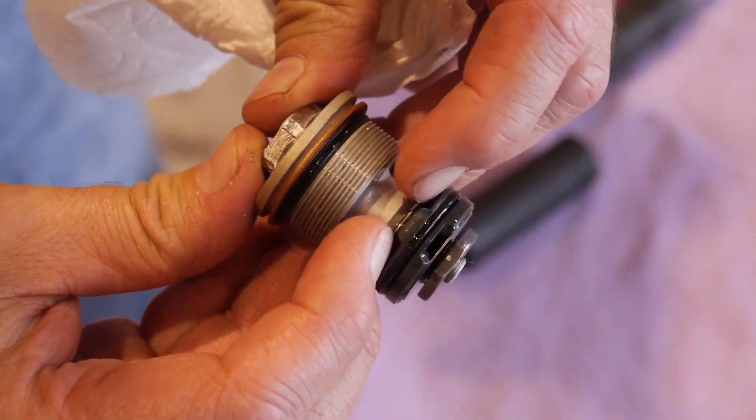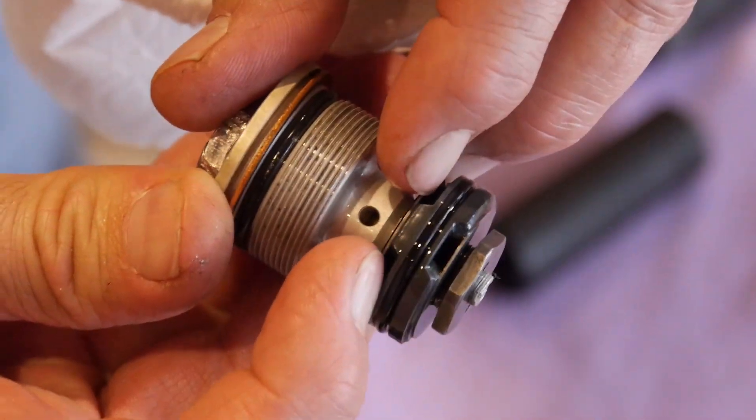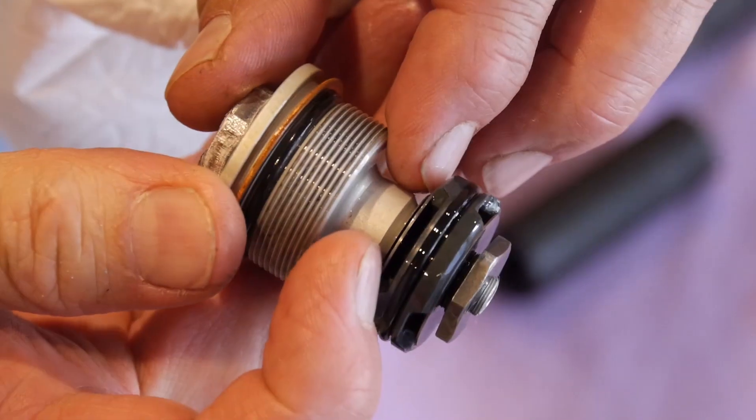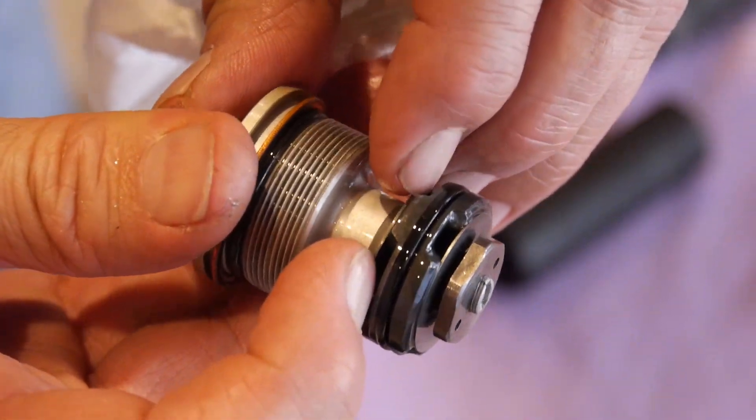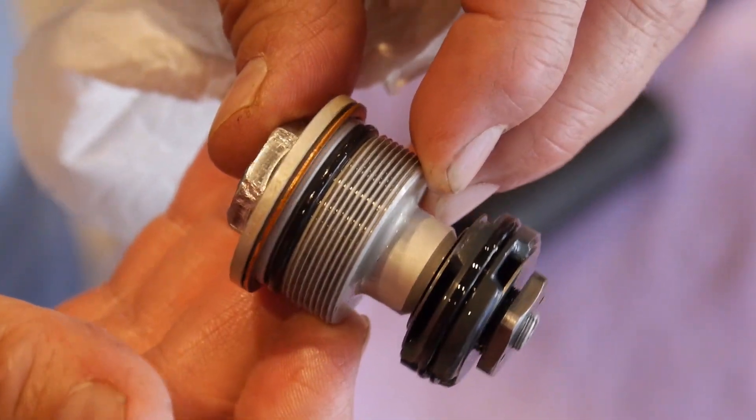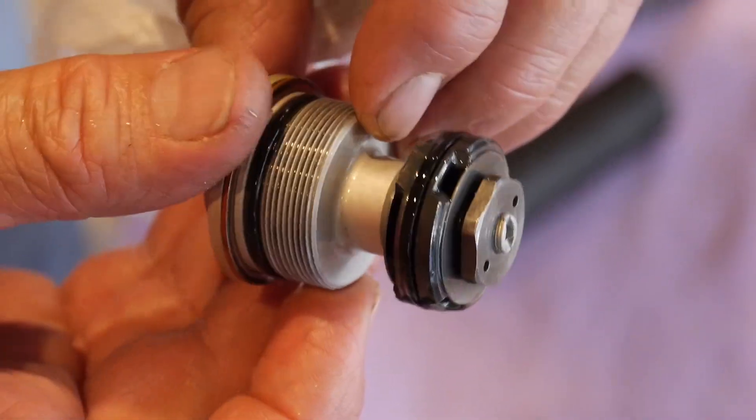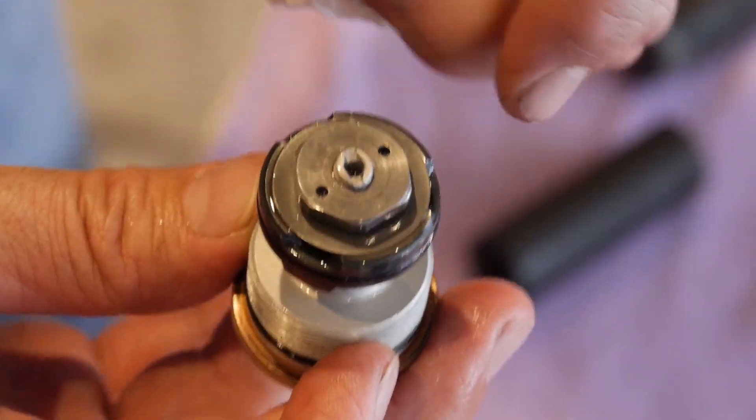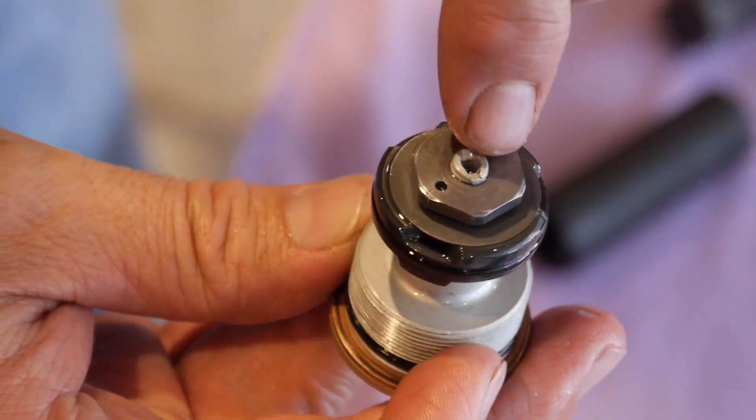The softer those shims are, the easier it'll be for that oil to squirt out. And they're so soft for spirited riding that we're going to change those. So our next step is going to be taking this nut off. You've seen in other videos, we're going to grind that.